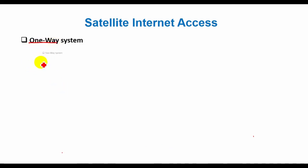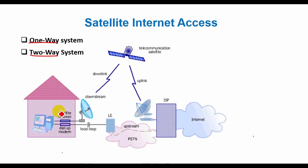Two different types of broadband internet satellite services are deployed: one-way and two-way systems. A one-way satellite system requires a satellite card and a satellite dish installed at the end-user's site. This system works by sending outgoing requests on one link using a phone line, with inbound traffic returning on the satellite link.